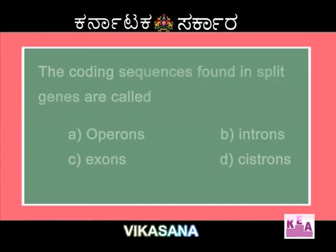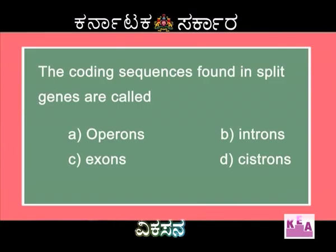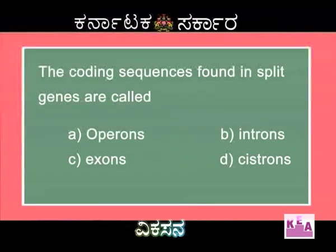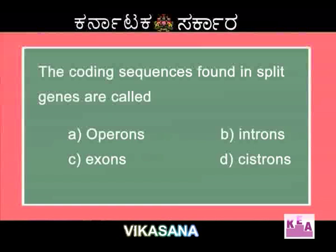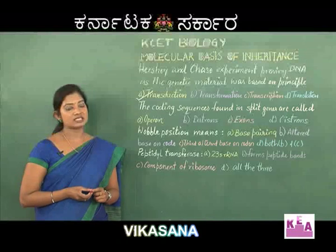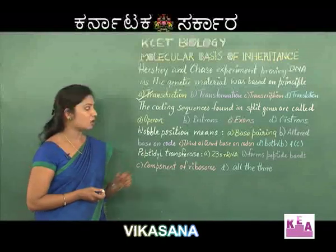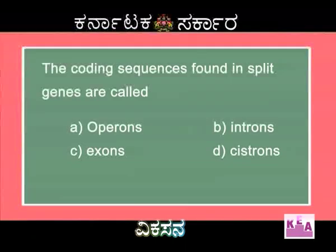Next question: the coding sequences found in split genes are called — A: Operon, B: Introns, C: Exons, D: Cistrons. An operon is a set of genes comprising control genes, structural genes, and a promoter gene. Introns are the non-coding intervening sequences. Exons are the coding sequences. A cistron is a gene capable of synthesizing a specific polypeptide chain. So the right answer is option C: Exons.